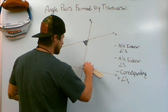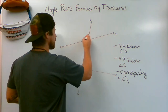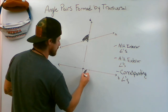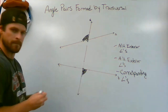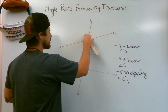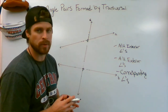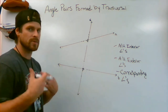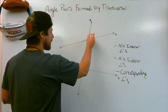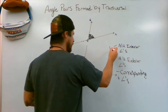Now mark an alternate exterior pair: go to the left side of the transversal on the outside, then the right side on the outside — there are your alternate exterior angles. For corresponding angles, think about the position: top right, top left, bottom left, bottom right. Mark one corner and then mark the same corner at the other intersection — those are corresponding angles.